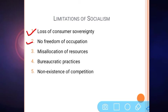The second limitation is no freedom of occupation. In socialism, the government owns all types of businesses, and hence private people do not have any choice regarding occupation — they do not have occupational freedom. Unlike other economic systems, such as capitalism, where a person can start any type of legal business, in socialism the businesses are controlled and run by the government.